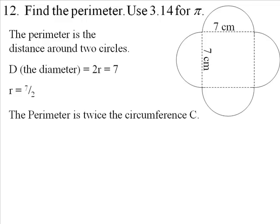Now the perimeter is going to be twice the circumference, because we're going to go around two circles. So let's find the circumference of one circle.